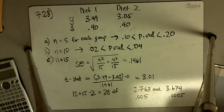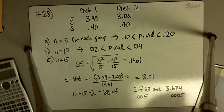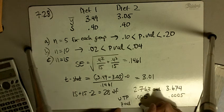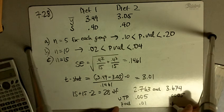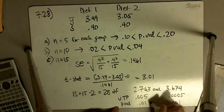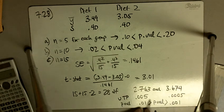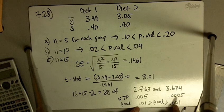If you look up 28 degrees of freedom, 3.674. And so that's our upper tail probability, and so our p-value is going to be double this, so it's between 0.01 and 0.001. And so for part C, our p-value is in between 0.001 and 0.01.